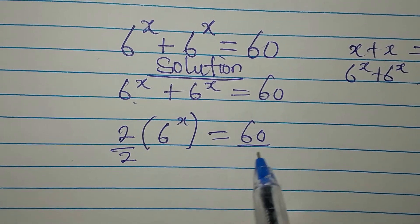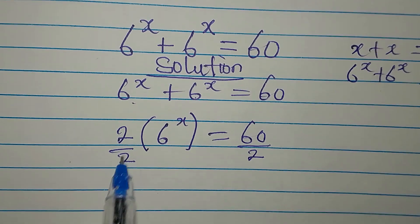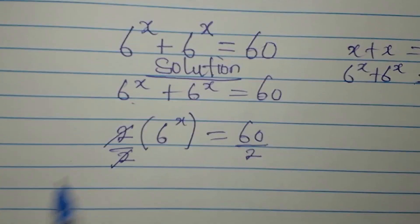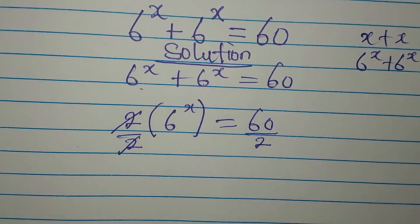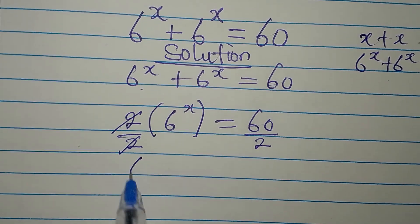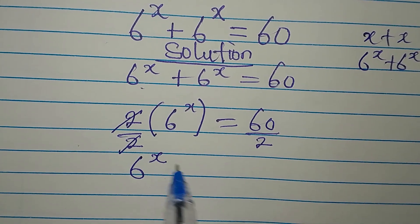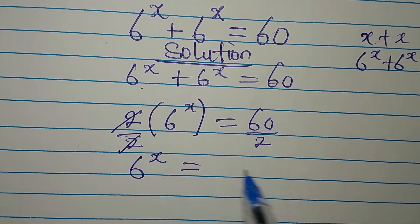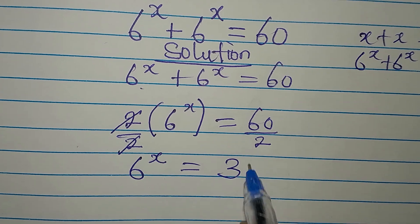Divide by 2 on both sides. This simplifies, and now 6 to the power of x will be equal to 30.